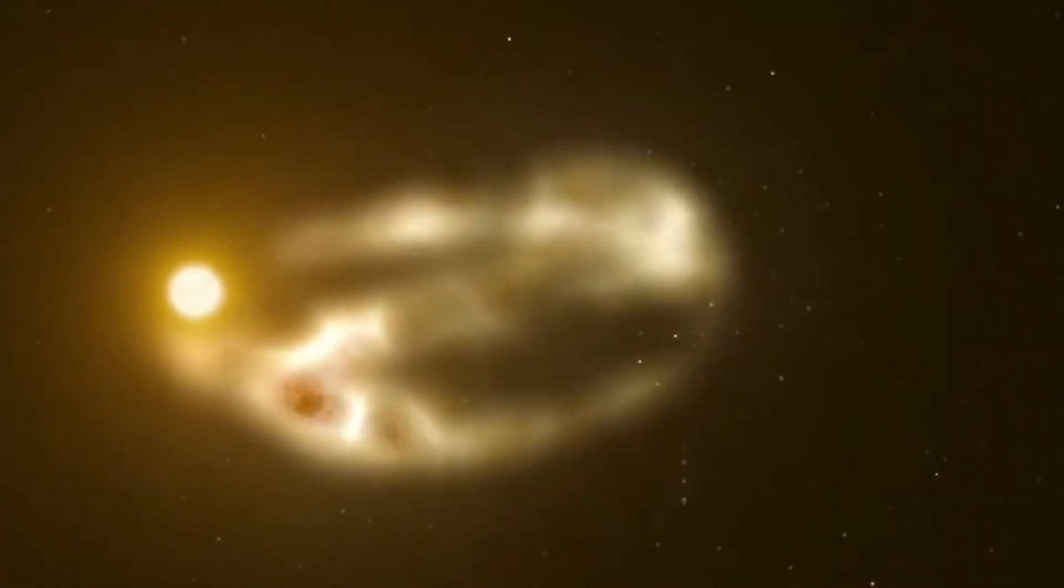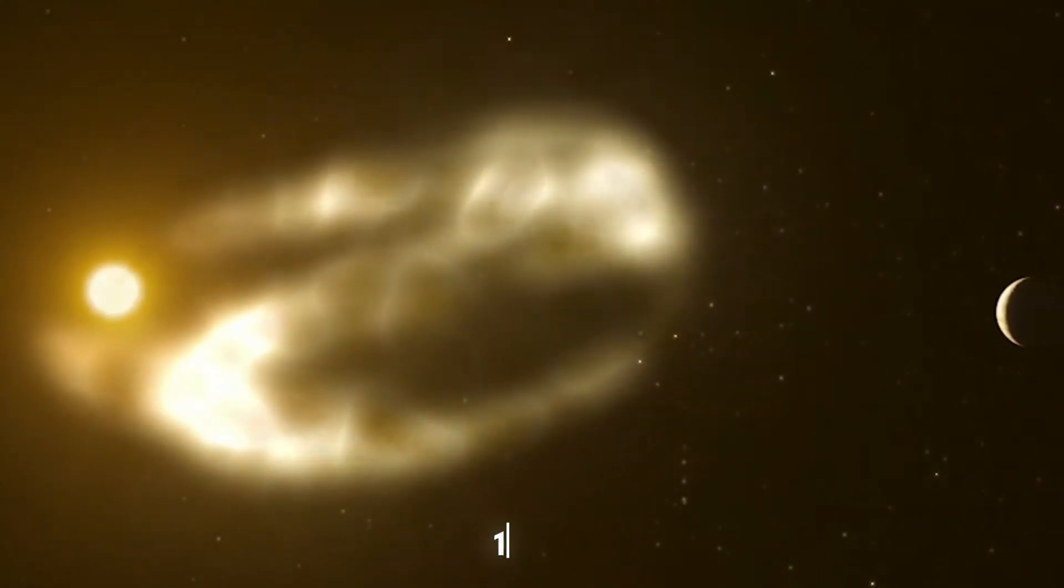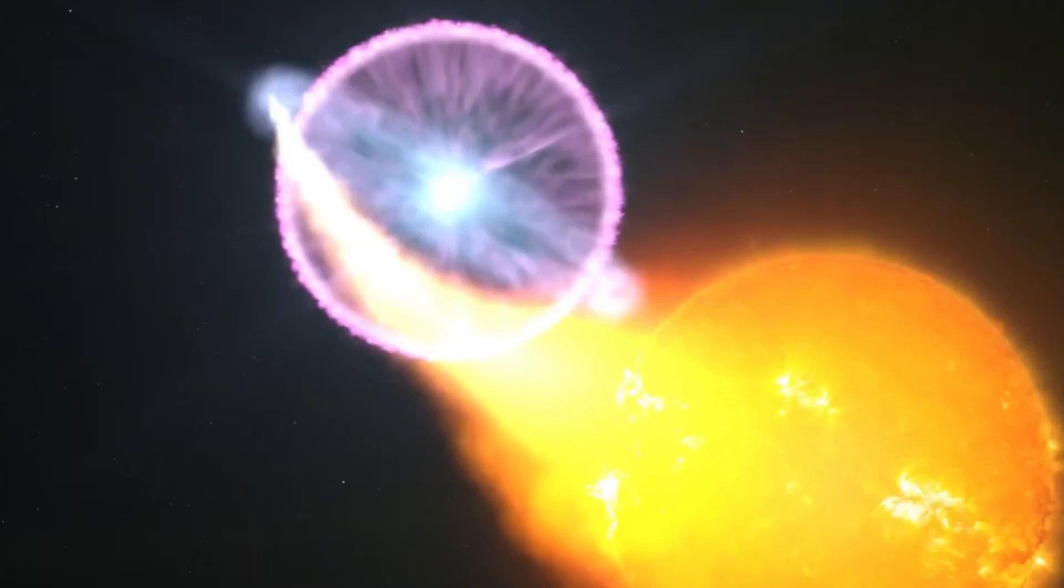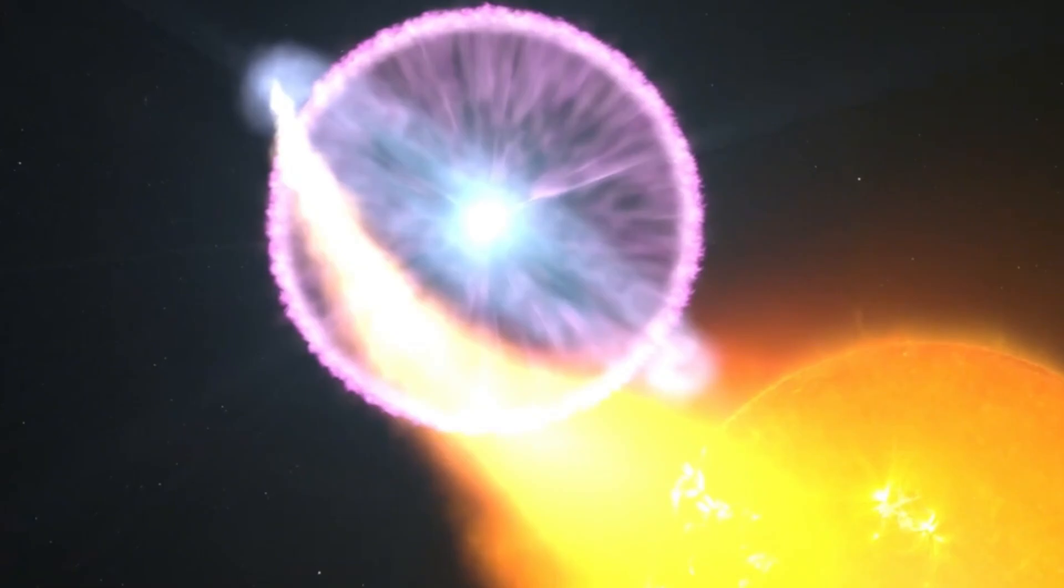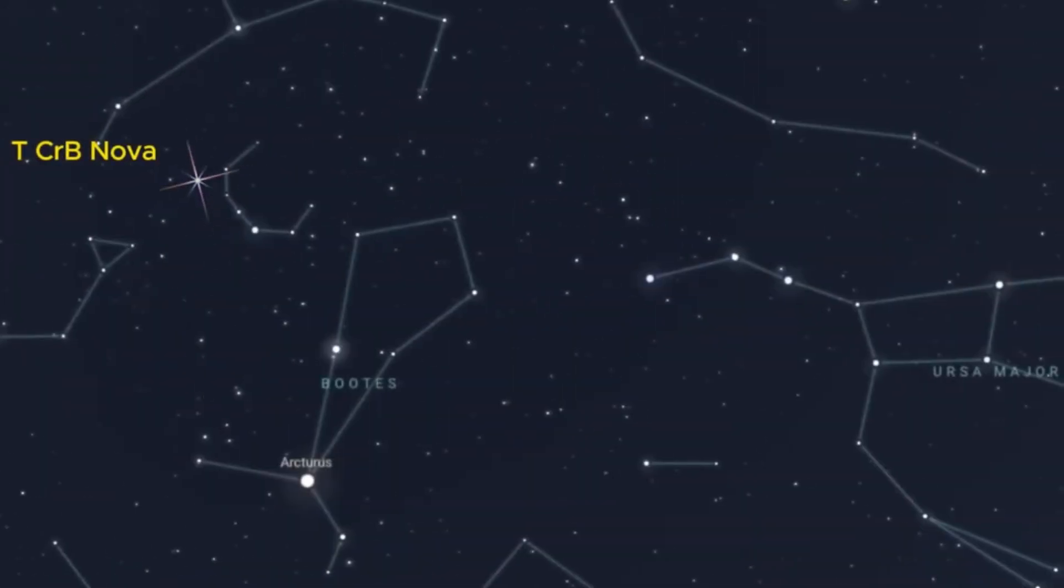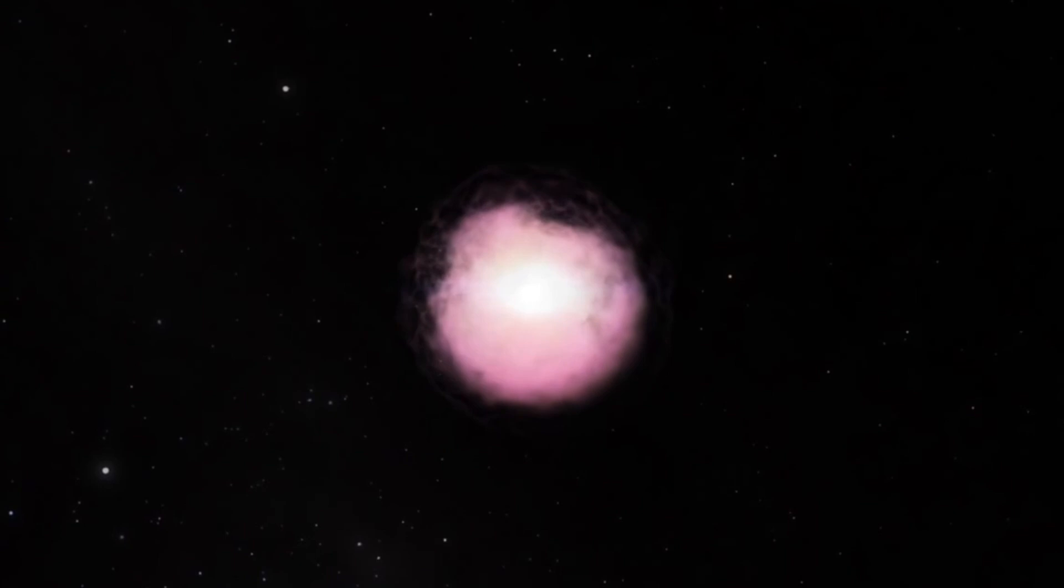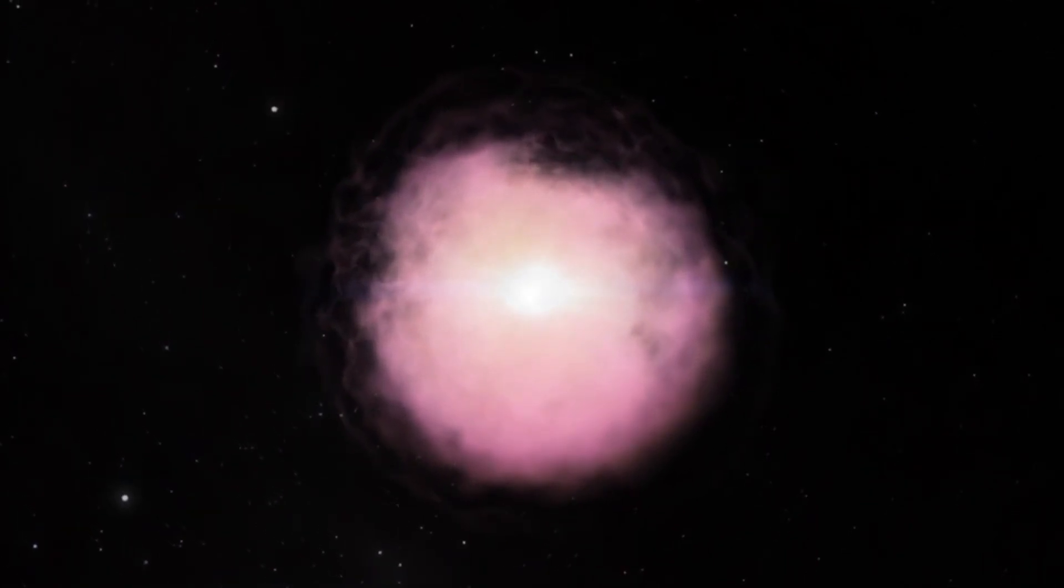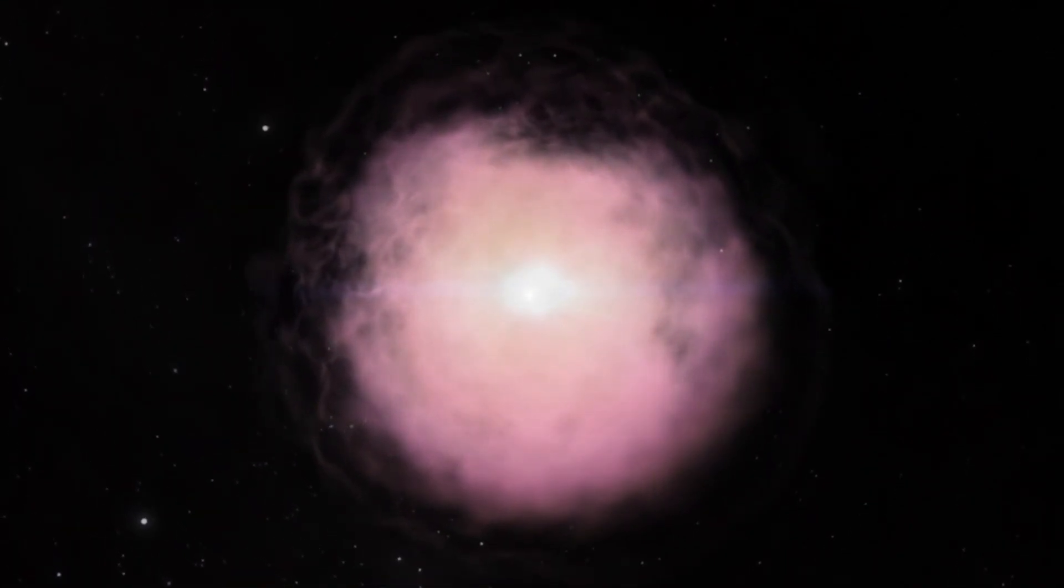The last observed nova event of TCRB on Earth was in 1946. Recent observations suggest that its behavior in the past decade resembles the patterns observed before the 1946 eruption. Some researchers predict that the next nova event could occur by September 2024 if this trend continues.